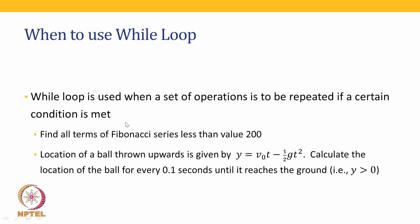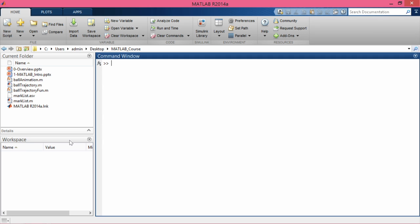A while loop is used when a set of operations is to be repeated until a certain condition is met. For example, if we want to find the Fibonacci series not for the first ten terms, but until the value of the last term becomes less than two hundred, we use a while loop — because we want to repeat until a condition is met, not for a fixed number of times.